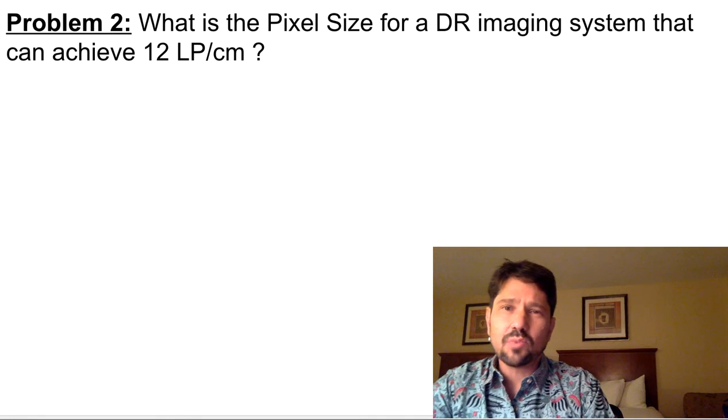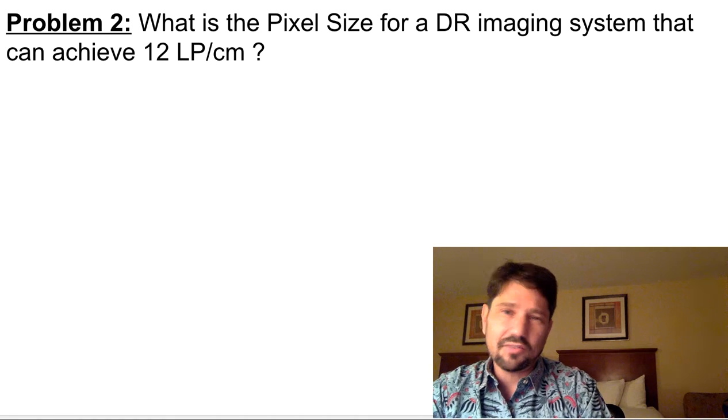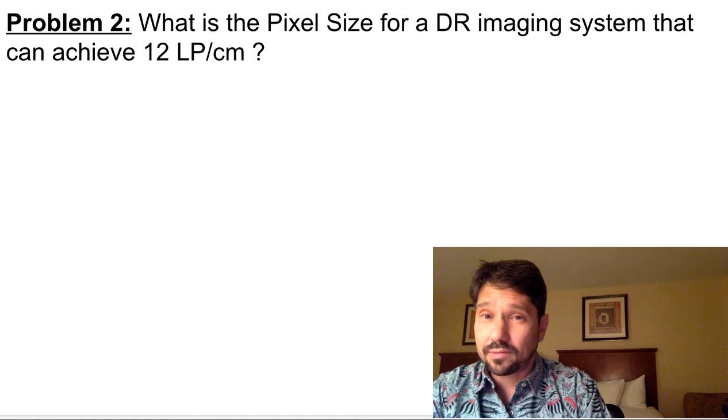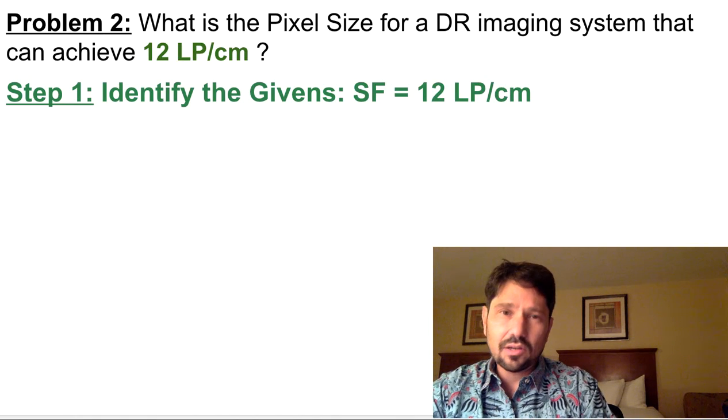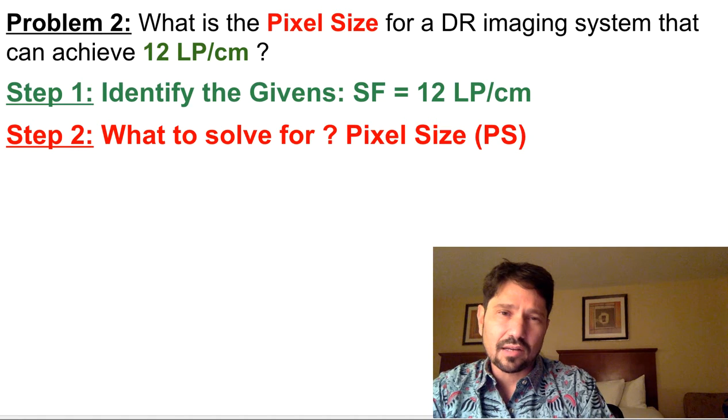All right, our next problem is what's the pixel size for a DR imaging system that can achieve 12 line pairs per centimeter? The givens are 12 line pairs per centimeter. What we're going to solve for is pixel size.